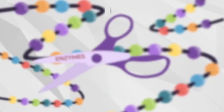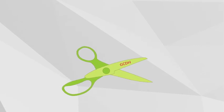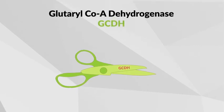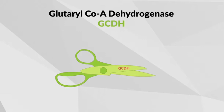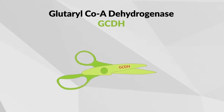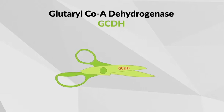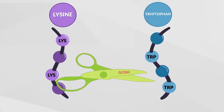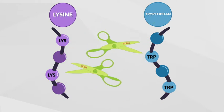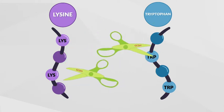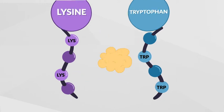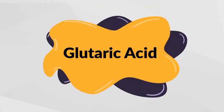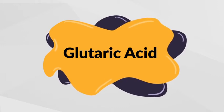Think of enzymes like a pair of scissors. Individuals with GA1 have a deficiency of an enzyme called Glutaryl Coenzyme A Dehydrogenase. The Glutaryl Coenzyme A Dehydrogenase enzyme is used in the body to break down two amino acids called lysine and tryptophan. When someone has GA1, that person cannot break down lysine and tryptophan, which then leads to a buildup of a toxic byproduct called Glutaric Acid and other substances in the blood and in the brain.